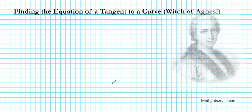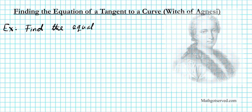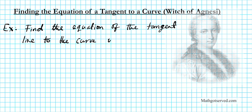In this clip we're going to go over an example of how to find the equation of a tangent line to a curve using differential calculus. The question is: find the equation of the tangent line to the curve y equals 8 over (4 plus x squared) at x equals 1.